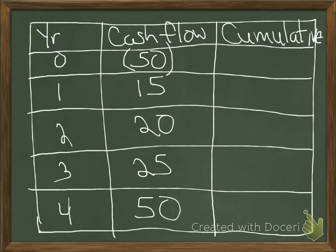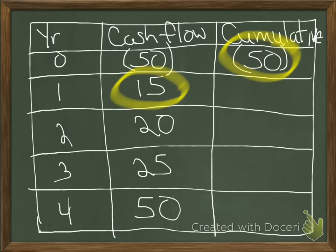Next, we need to do the cumulative cash flow. And that's just adding up the total. So negative 50 in year zero, we have no other cash inflows. So we are negative 50 for this also. Now, to figure out the next cumulative cash flow, we need to take our negative 50 plus our positive 15. And together, we get a negative 35. So that's how we get our cumulative here. And we do the same thing again. So the negative 35 plus 20 gives us negative 15.